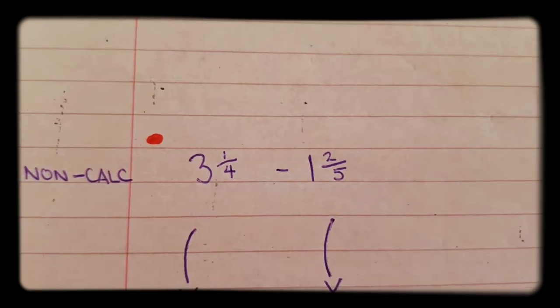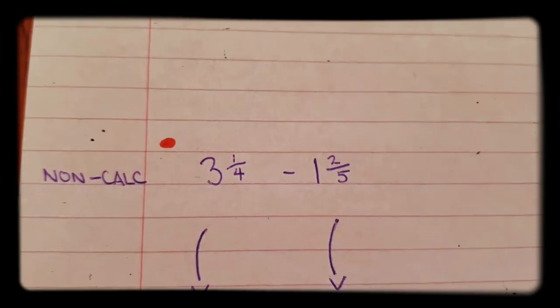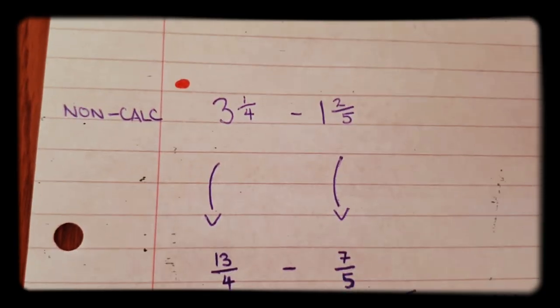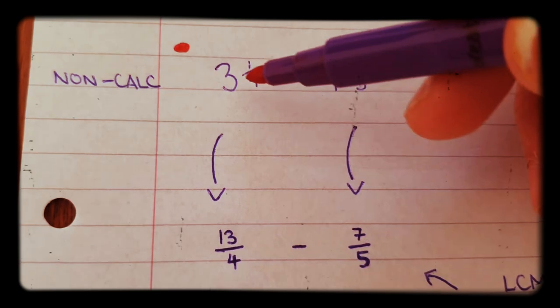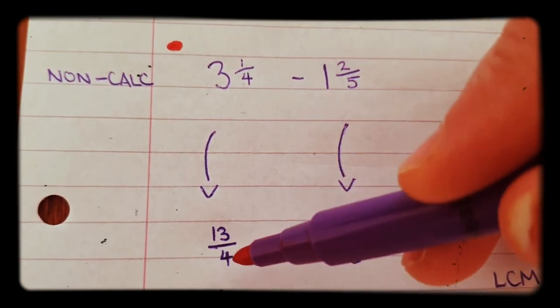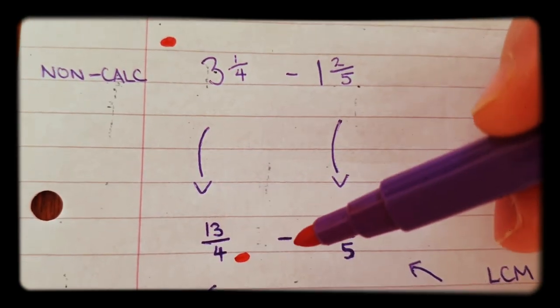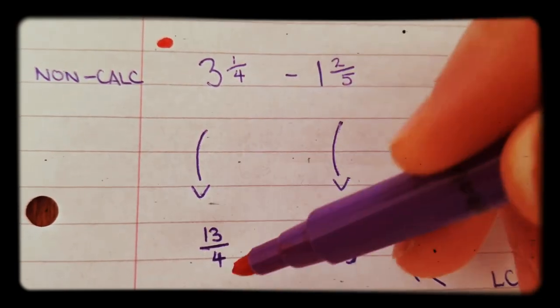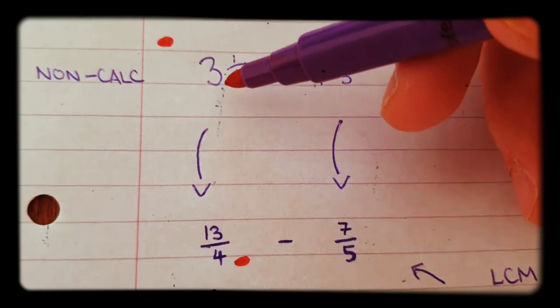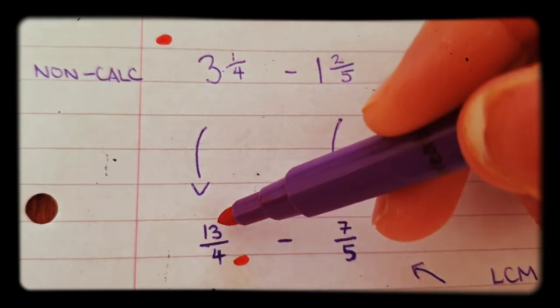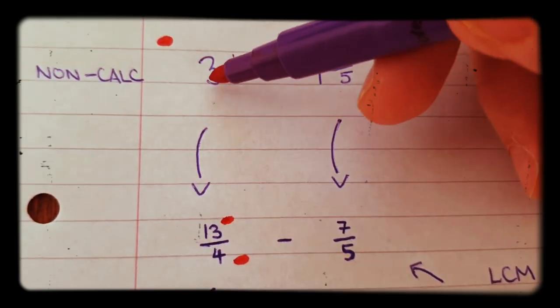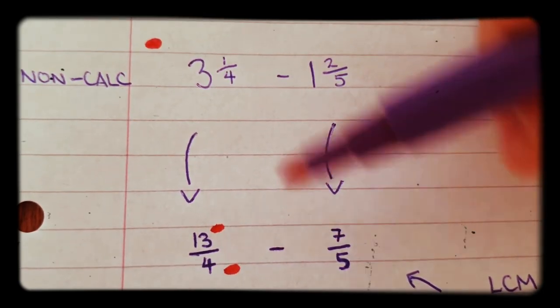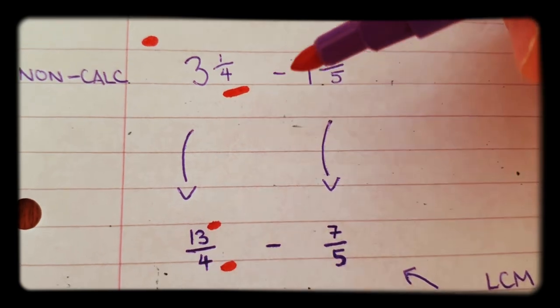Without a calculator, the first thing you do is turn these into top heavy fractions or improper fractions. This three and one quarters turns into 13 over 4. The way I did that was three times four plus one makes 13, and then that number goes at the top. So it's 13 over 4. Three times four is 12, add one makes 13, all over four because that's what it's over.